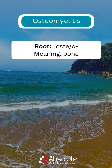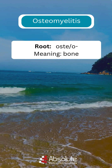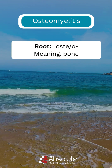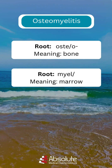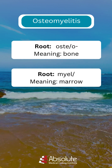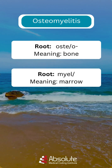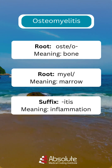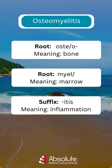The root word osteo, from Greek osteon, means bone. The root word myel, from Greek myelos, means marrow. The suffix itis, from Greek itis, means inflammation.